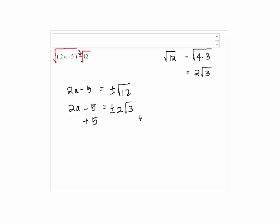To solve for a, we're going to add 5 on both sides. We have 2a equals 5 plus minus 2 radical 3. By dividing by 2, we get a equals 5 plus minus 2 radical 3 over 2 as the answer.